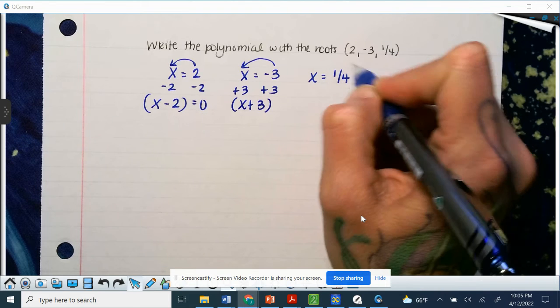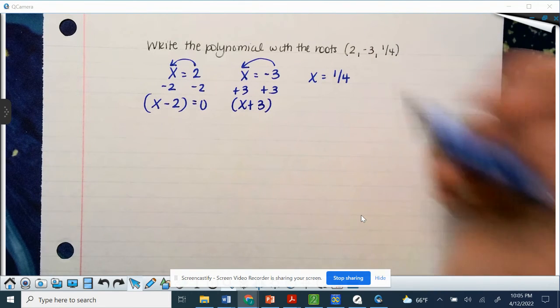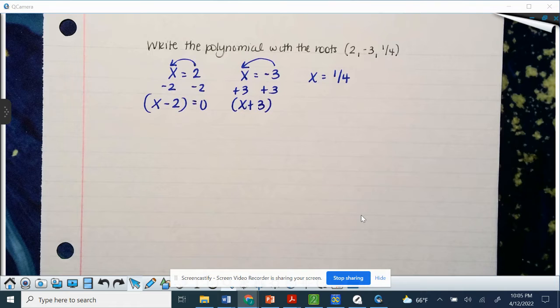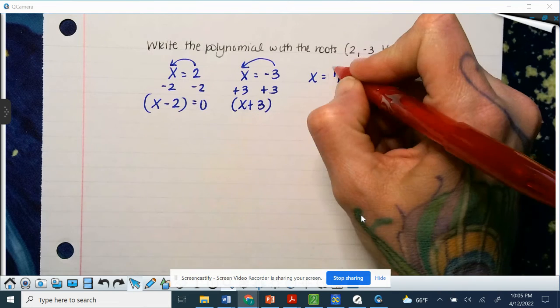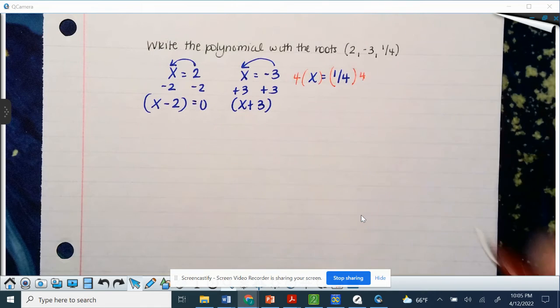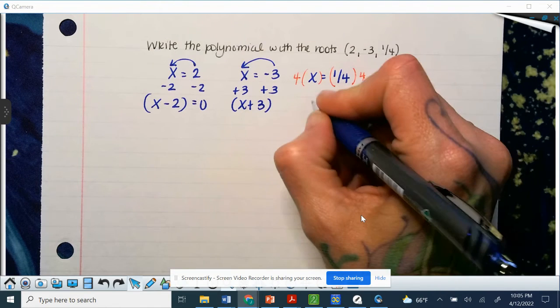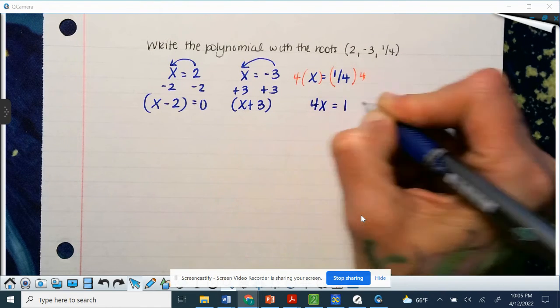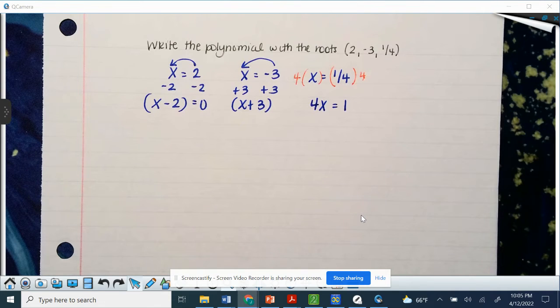And now this one's a little different, and it just depends on which way makes more sense to you. So that 4 is in the denominator, and the way we've learned to get rid of things in the denominator is to do the opposite. So instead of divide by 4, we're going to multiply by 4. So 4x equals 1, because our factors cannot have fractions.